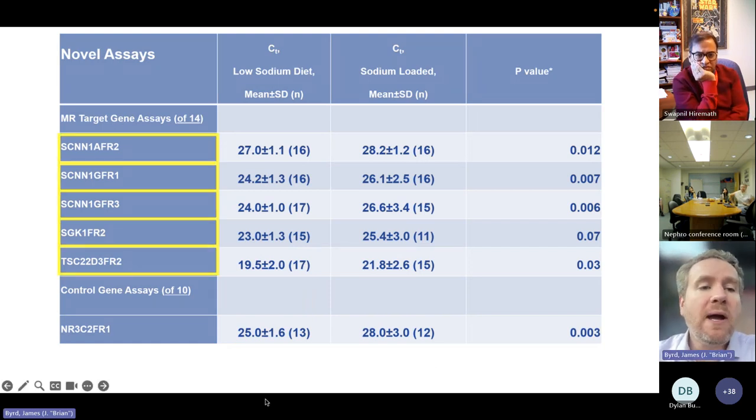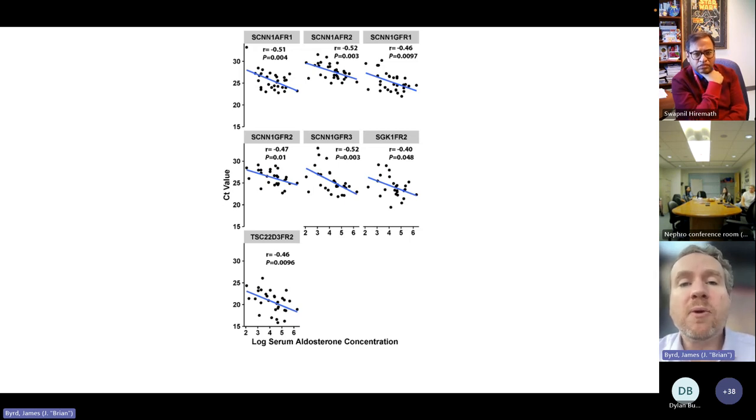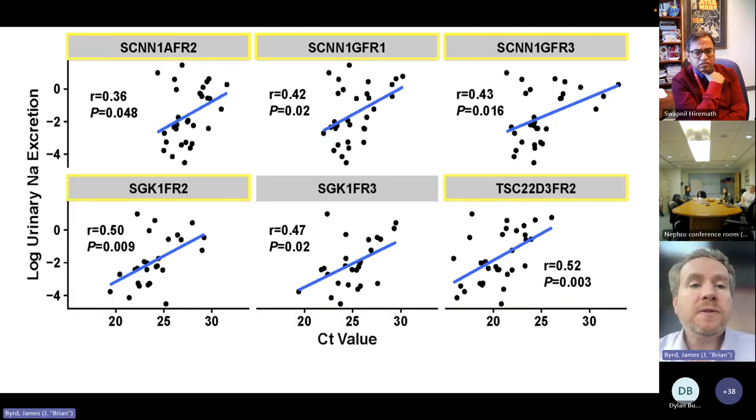What we found was that a variety of genes, the alpha subunit of the epithelial sodium channel ENAC and also the gamma subunit, SGK1 and TSC22D3 were suppressed in their expression by salt loading. In addition, we looked at the log serum aldosterone concentration and looked at the CT value, which as you may recall is inversely related to how much gene expression there is. What we found was that as serum aldosterone concentration was higher, there was a higher expression of these genes and lower CT value. Those same genes we found to be also correlated inversely with urinary sodium excretion in terms of their gene expression.